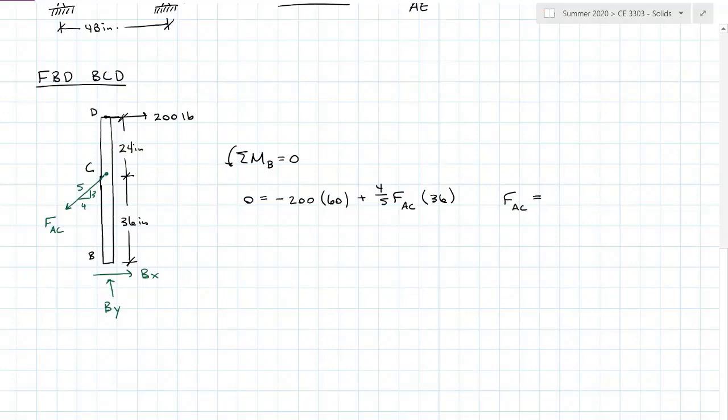The actual force for AC is 416 and two-thirds pounds, and it came up positive so it's acting in tension.